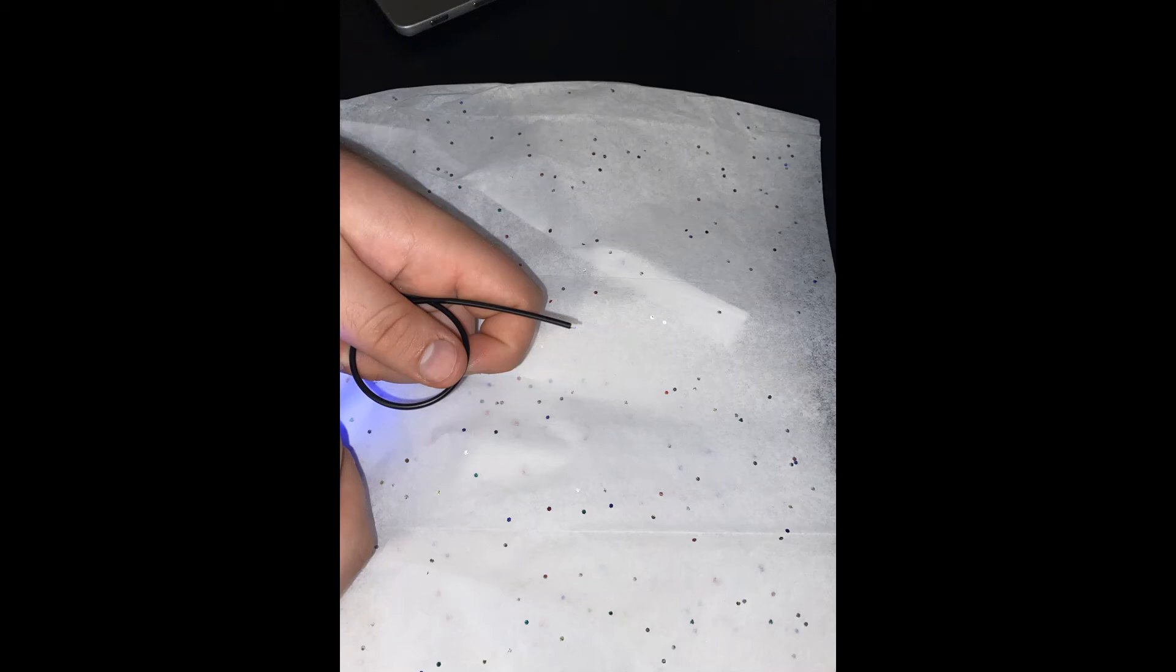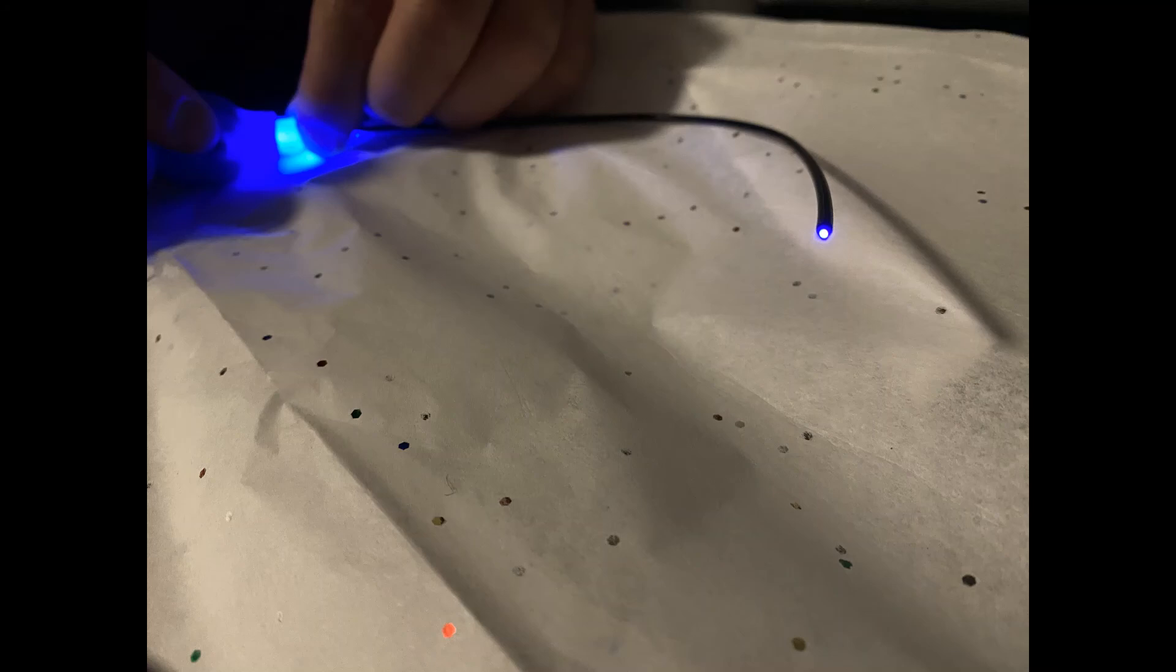This happens because the core has a higher refractive index than the cladding does, which means that all the light going through the core keeps getting reflected back into itself and comes out the other side.